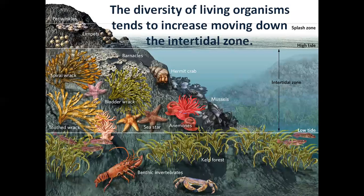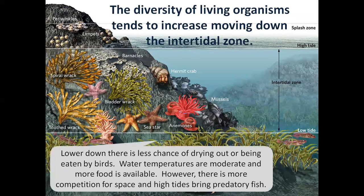The diversity of living organisms tends to increase moving down the intertidal zone. Lower down there is less chance of drying out or being eaten by birds. Water temperatures are moderate and more food is available. However, there is more competition for space and high tides bring predatory fish.